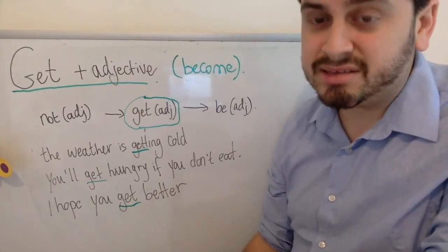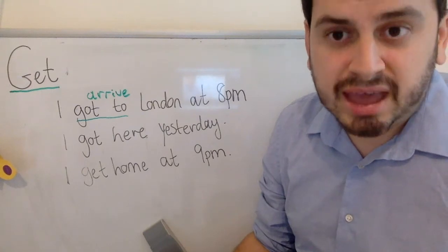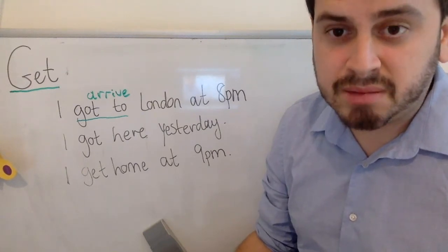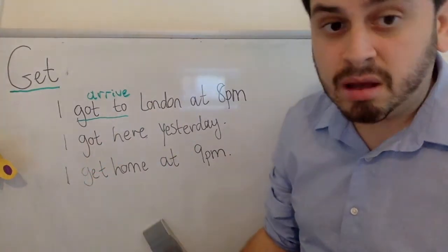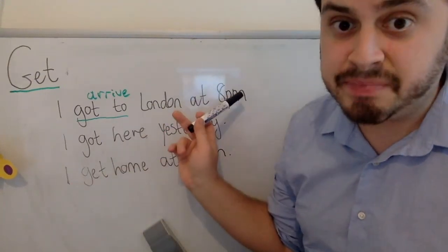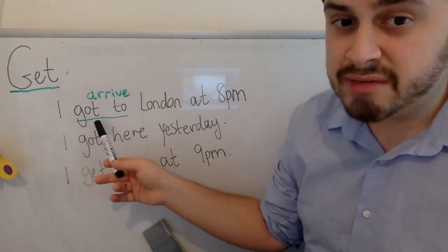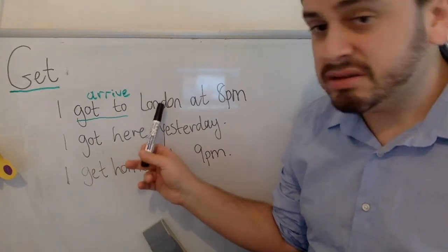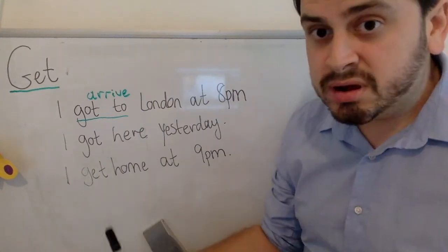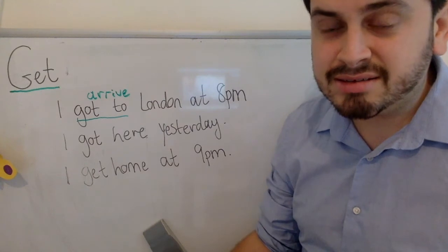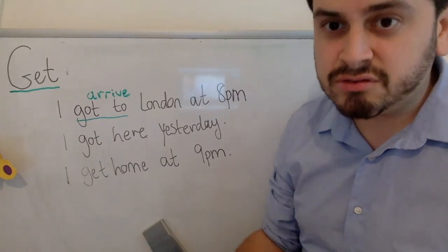Another meaning of 'get' is when we use it to mean 'arrive.' When we use 'get' to mean arrive, we add the preposition 'to,' so we say 'get to somewhere.' For example: 'I got to London at 8 pm' — I could substitute this with 'arrive': 'I arrived in London at 8 pm.' You can say 'get to work,' 'get to the supermarket,' 'get to the cinema.'